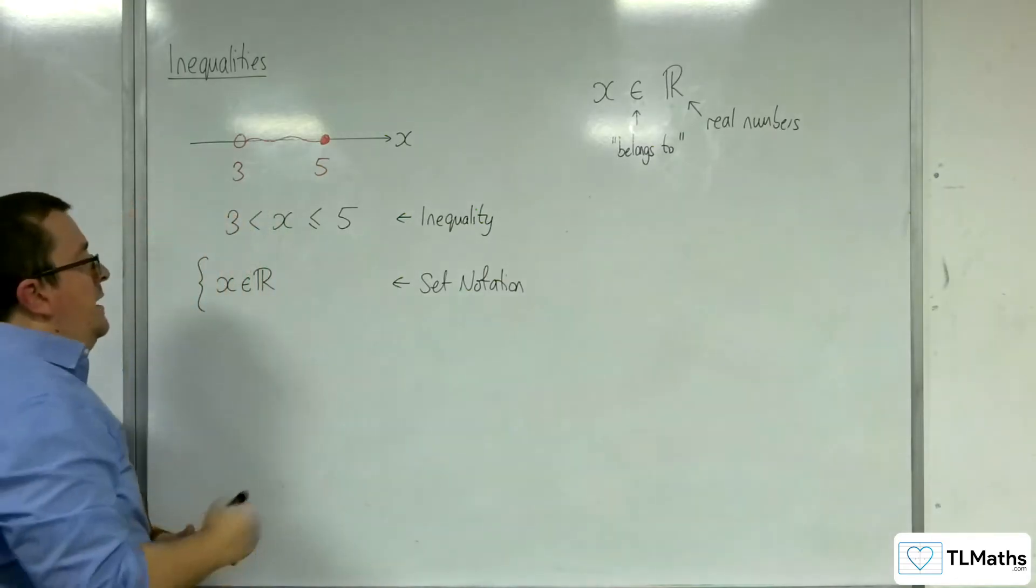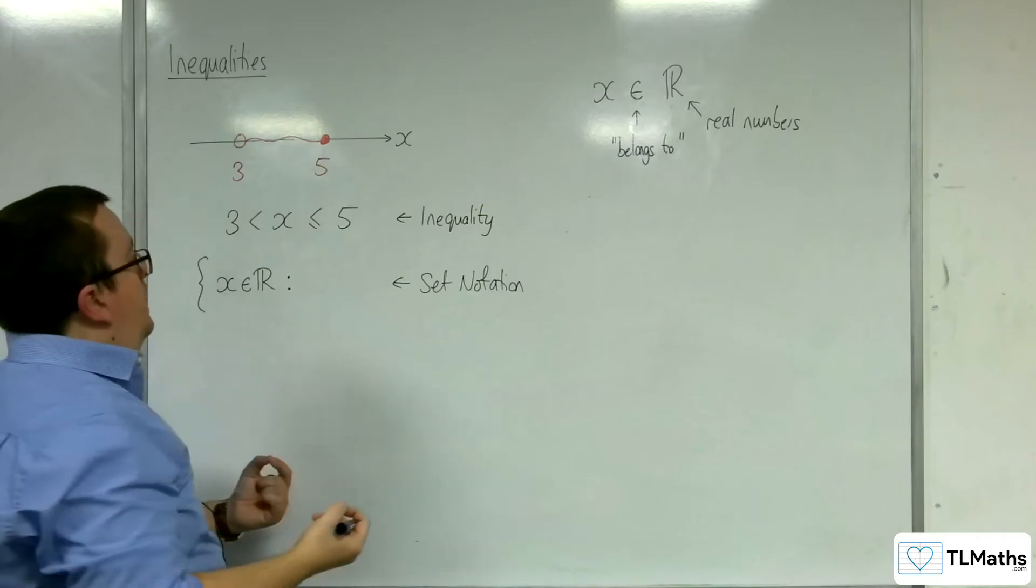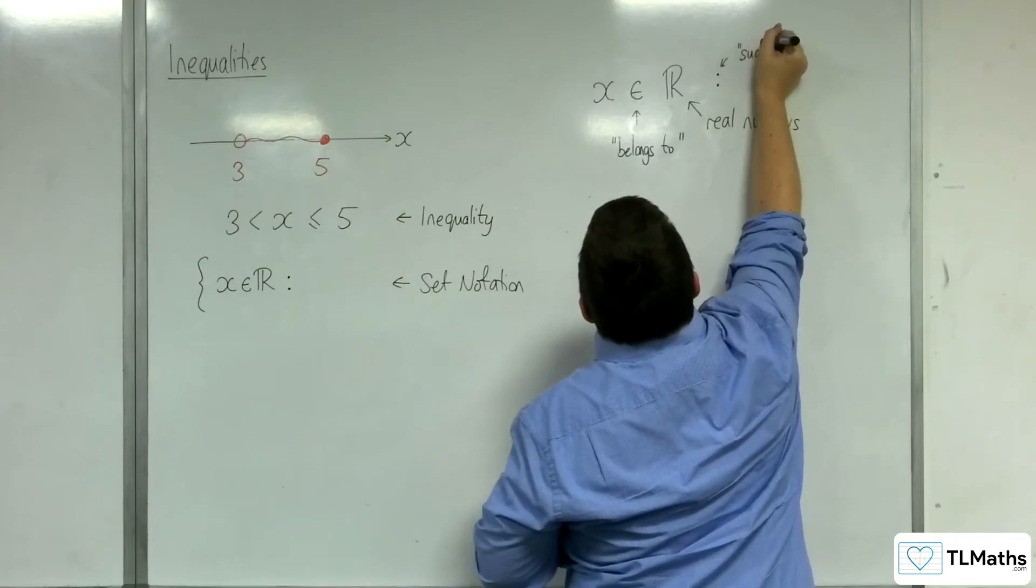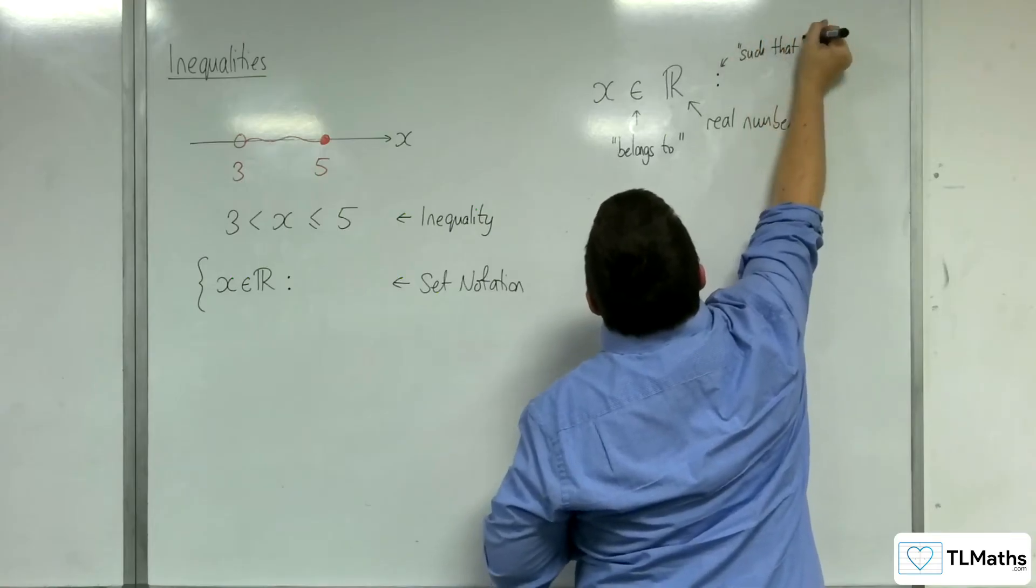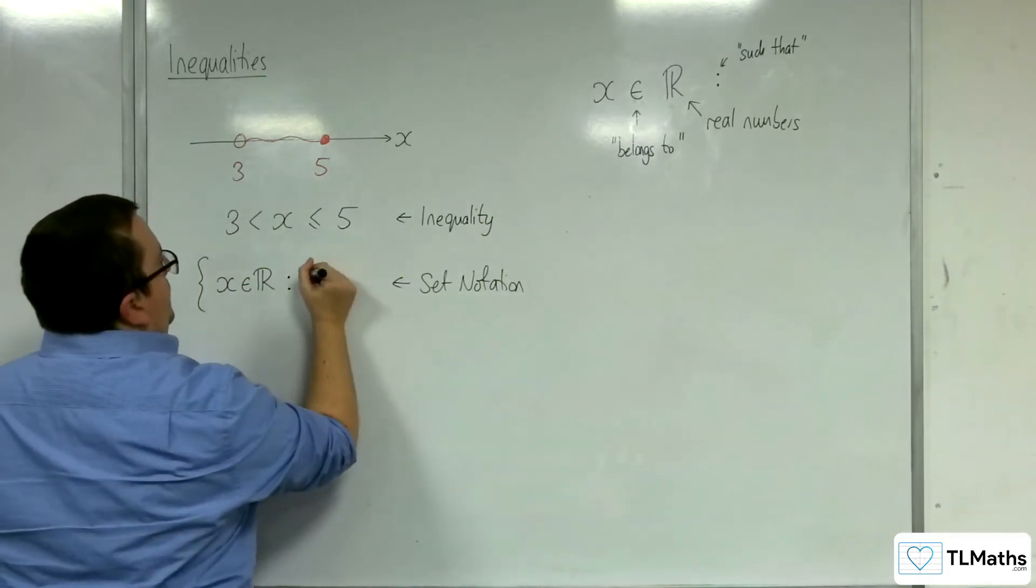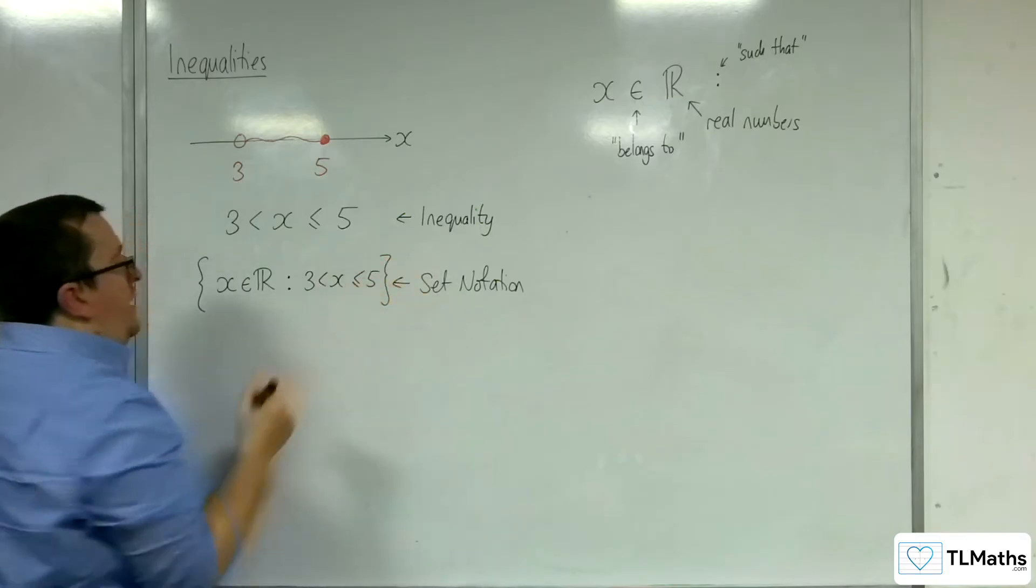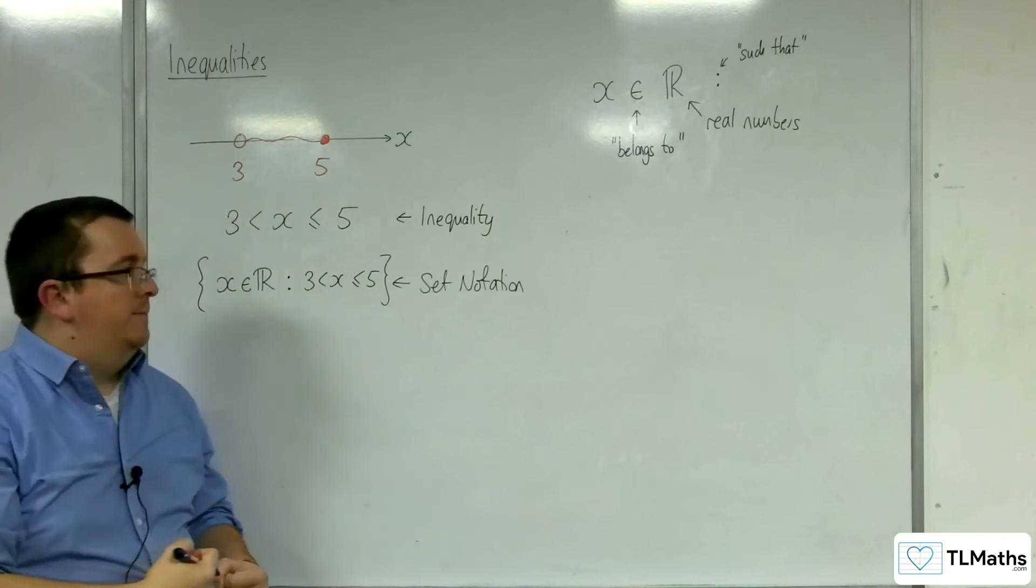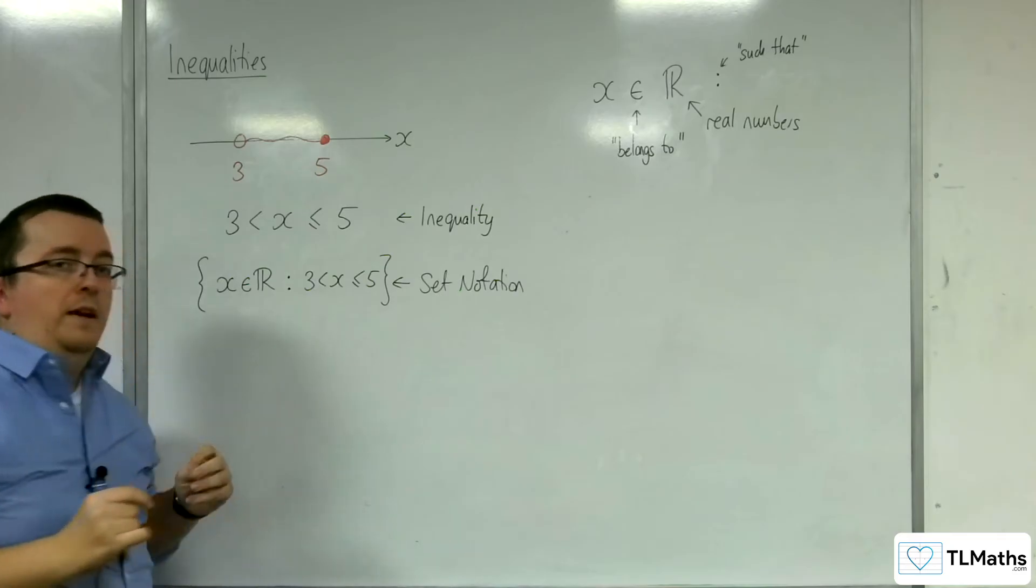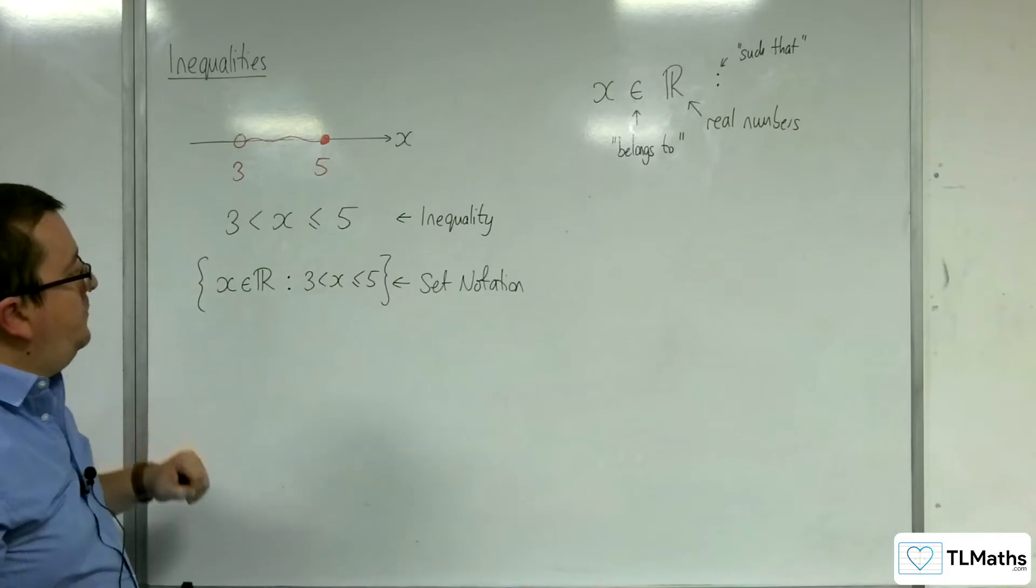X is a real number. And then we use a colon to represent such that. This colon means such that. So x belongs to the real numbers such that x is greater than 3, but less than or equal to 5. And then we close the curly bracket. This is set notation representing precisely the same information that this is saying.